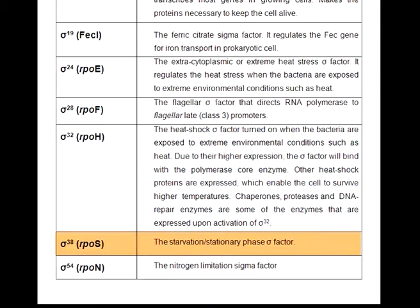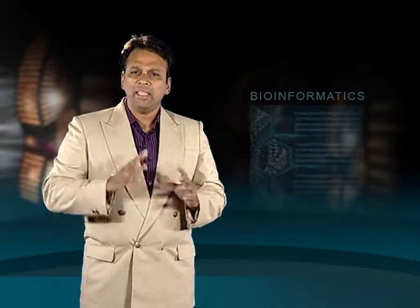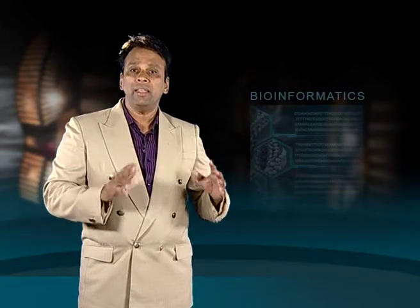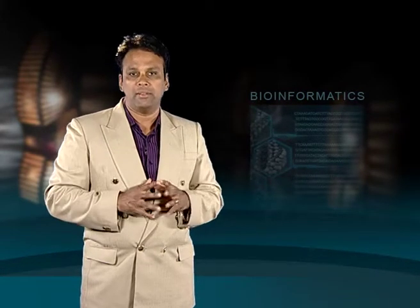Sigma 38, or RPO-S, is the starvation or stationary phase sigma factor. Sigma 54, or RPO-N, is the nitrogen limitation sigma factor. There are also anti-sigma factors that inhibit the function of sigma factors, and anti-anti-sigma factors that restore sigma factor function.